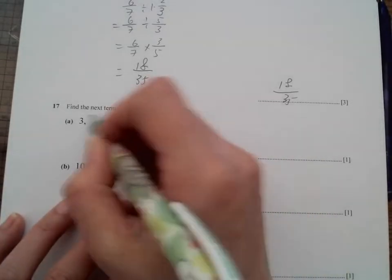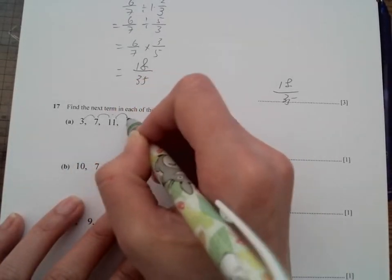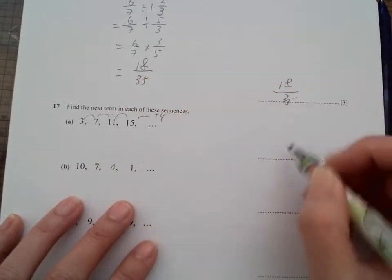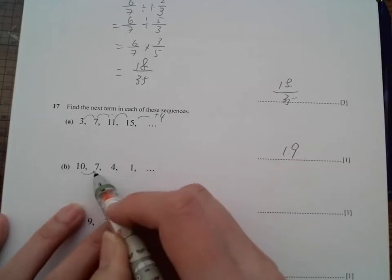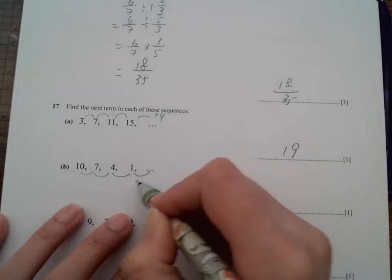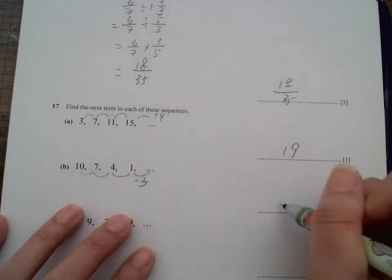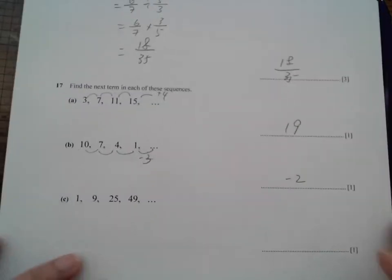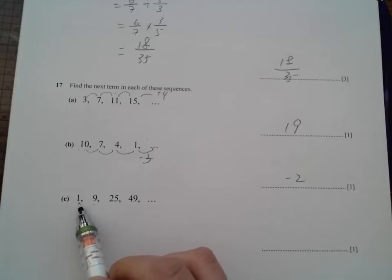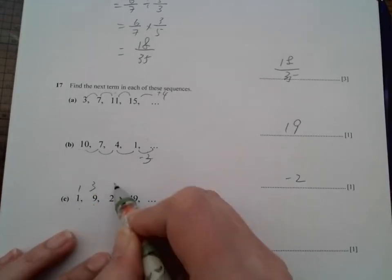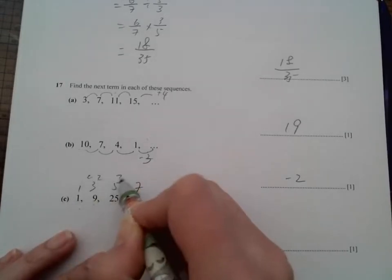Right, next I'm going to have a sequence. So we add 4, add 4, add 4, the next one should be add 4. So we have 19. And minus 3, minus 3, minus 3, the next one should be minus 3. So that should be negative 2. Last but not least, I can see square numbers here: 1, 3, 5, 7 squared. So the next one should be 9 squared, should give you 81.